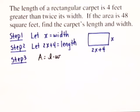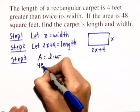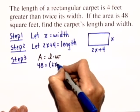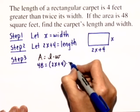We'll fill in the unknown quantities. The area we're told is 48 equals the length, which is 2x plus 4, that quantity, times the width, which is x.